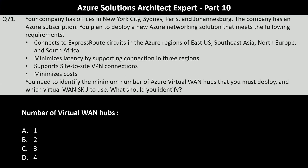Question number 71. Your company has offices in New York City, Sydney, Paris, and Johannesburg. The company has an Azure subscription and plans to deploy a new Azure networking solution. The application must connect to ExpressRoute circuits in the Azure regions of East US, Southeast Asia, North Europe, and South Africa; minimize latency by supporting connections in three regions; support site-to-site VPN connections; and minimize costs. You need to identify the minimum number of Azure Virtual WAN hubs to deploy and which Virtual WAN SKU to use.